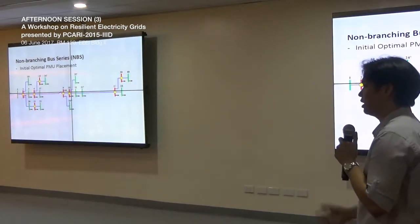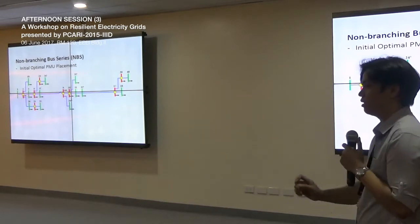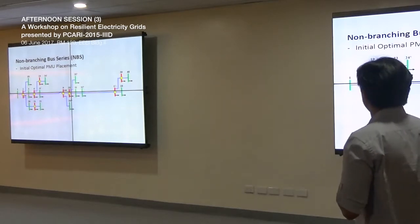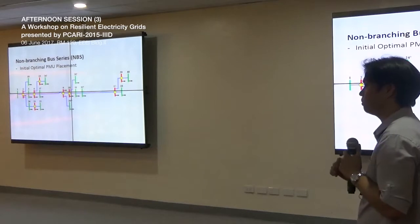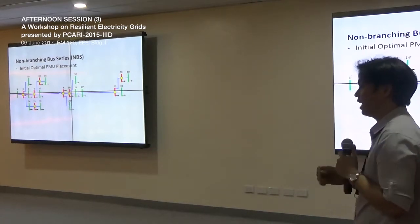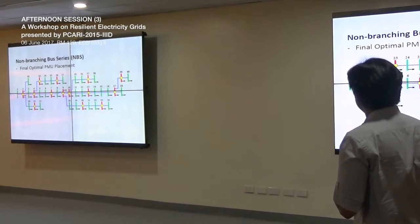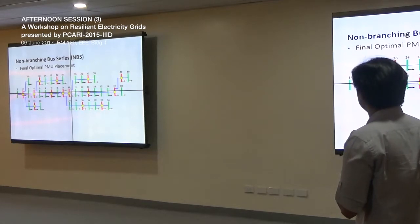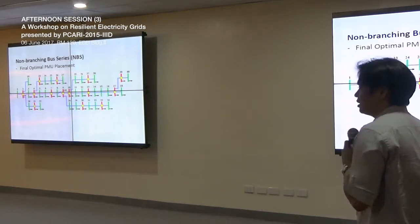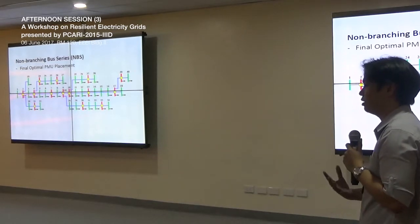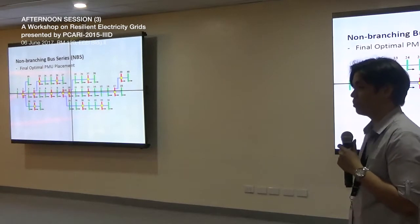With predetermined buses like the leaf and leaf parent buses, we already know that buses 23, 22, and other leaf parents should have a PMU installed. We found that we can revert the reduced NBS back to their original form and deterministically identify the necessary PMU locations. For example, the equivalent bus of 24 is reverted back to buses 25, 26, 27, and so on. From a 40-bus network, we reduced the amount of optimization needed down to four — and with only four buses remaining, we can solve the system by inspection. For distribution systems, optimization may not be necessary.